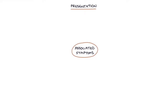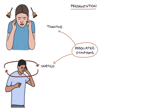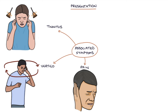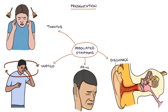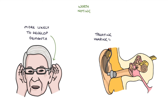Associated symptoms may include tinnitus, which is a ringing sound in the ears; vertigo, which is a sensation that the room is spinning; pain, which may indicate infection; discharge, which may indicate an outer or middle ear infection; and potentially neurological symptoms. It's worth noting that patients with hearing loss are more likely to develop dementia, and treating the hearing loss — for example using a hearing aid — may reduce the risk of dementia developing.